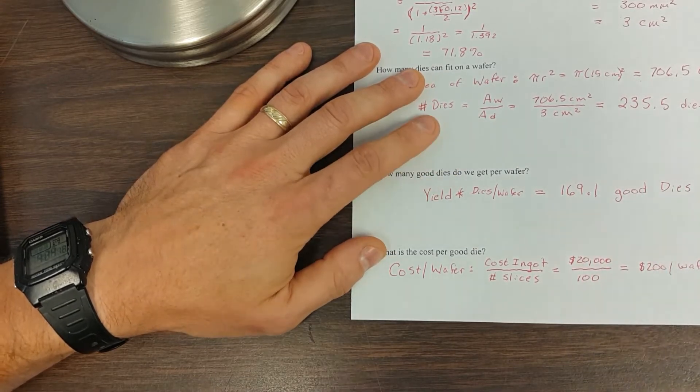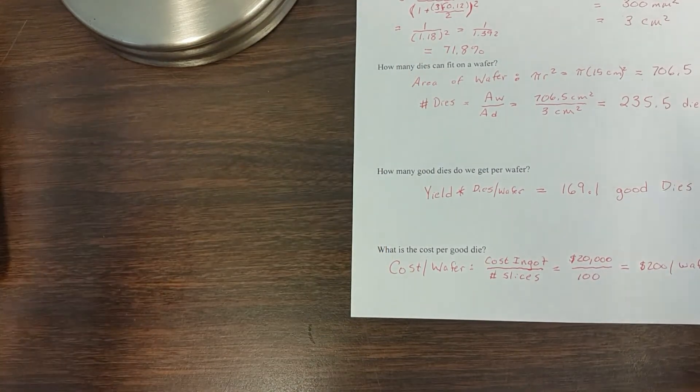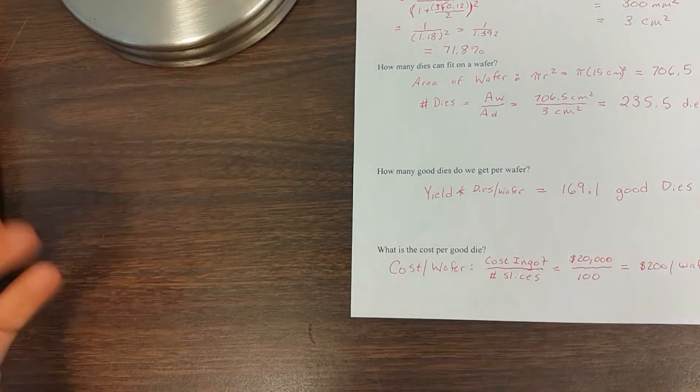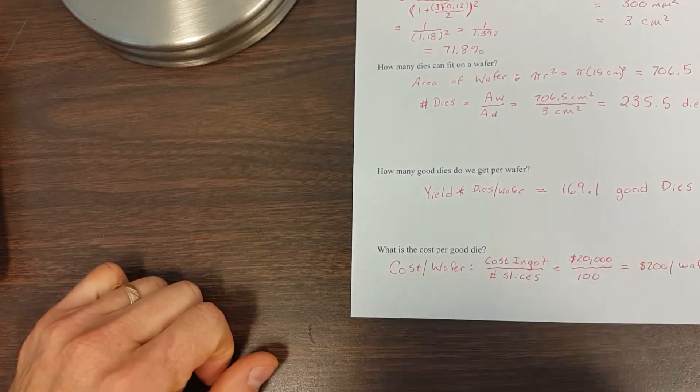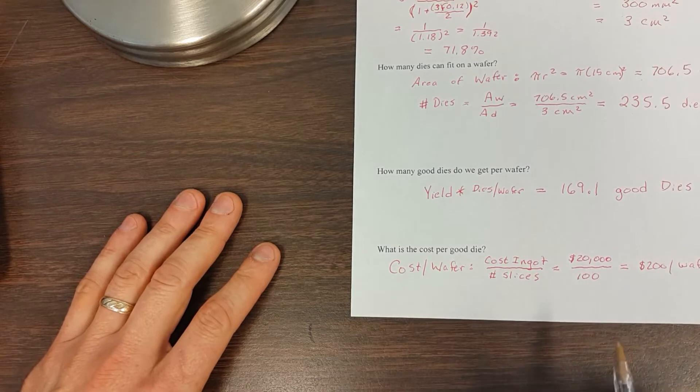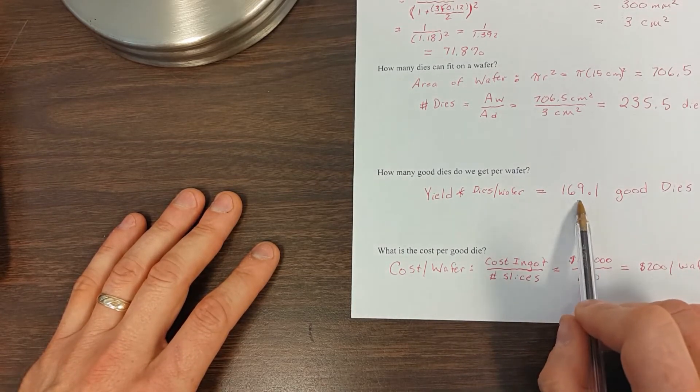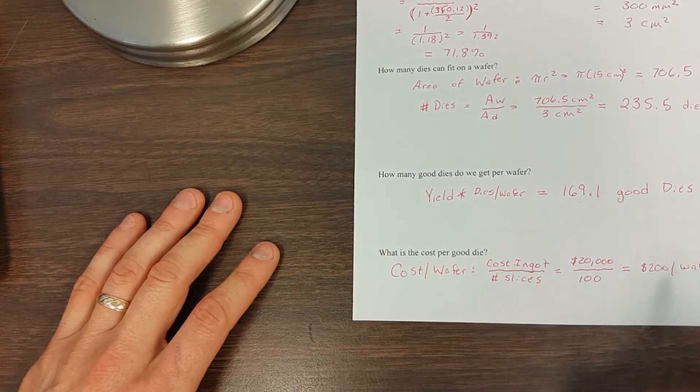And again, these equations are all in the book, but if you think about it, I sell you an ingot for $20,000 and you can get a hundred slices of wafers out of it. Well, then that's going to be $200 per wafer. Now in that $200, we got 169 good dies out of it. So what do those dies cost? Well, it's going to be about a dollar a piece, because we paid $200, we got almost 200 dies.